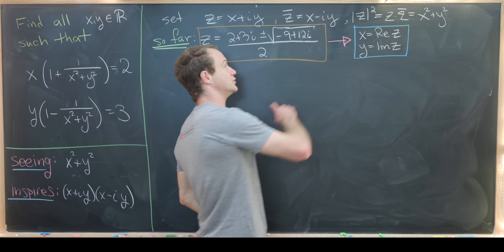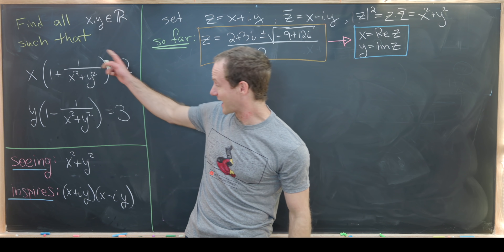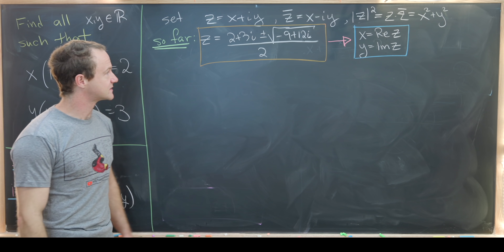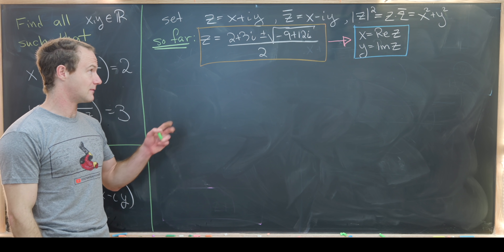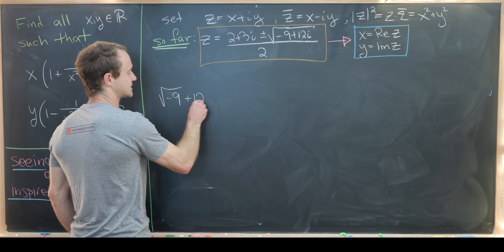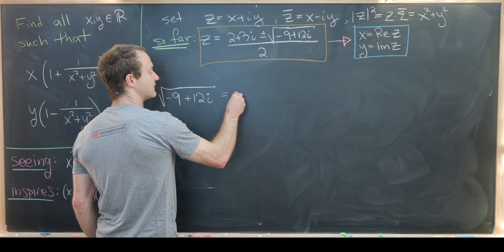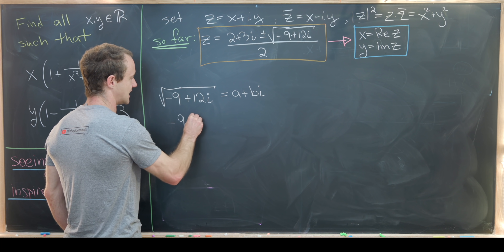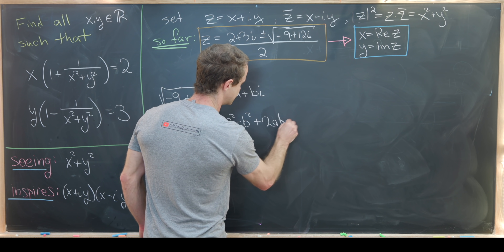The real part will be x and the imaginary part will be y in our solution. The only thing standing in our way is simplifying √(−9 + 12i). Since complex numbers are closed under square roots, this should be of the form a + bi where a and b are real. Squaring both sides gives −9 + 12i = (a² − b²) + 2ab·i.